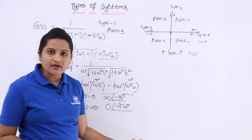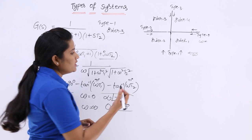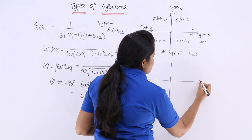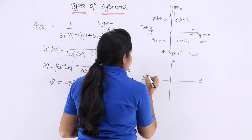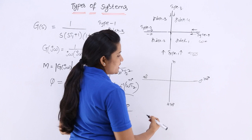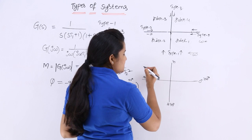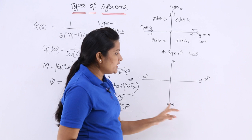Using these two magnitude-phase combinations, we can plot the Nyquist plot. Setting up the coordinate axes: 0°, 90°, 180°, 270°/360°. Note that −90° corresponds to 270°, −180° corresponds to 0° (or 360°), and −270° corresponds to 90°.